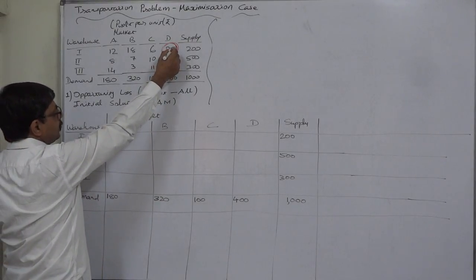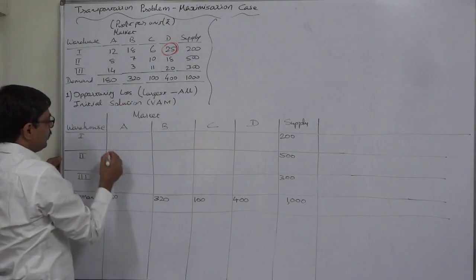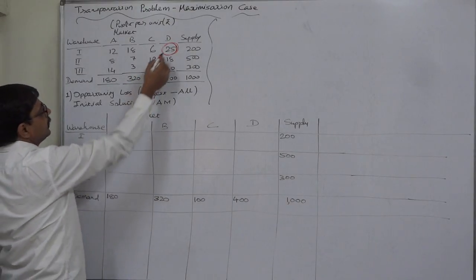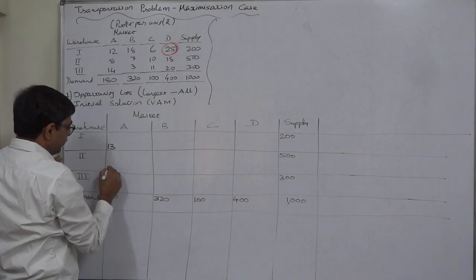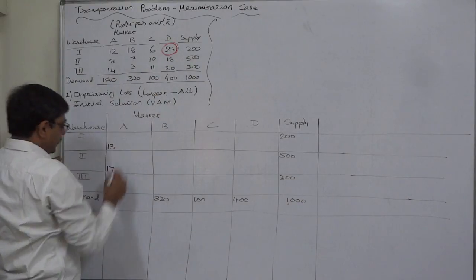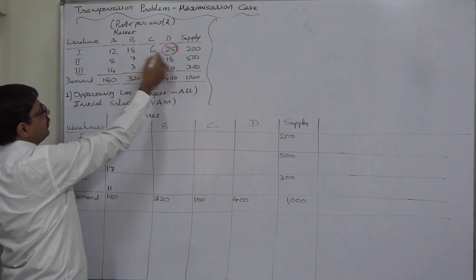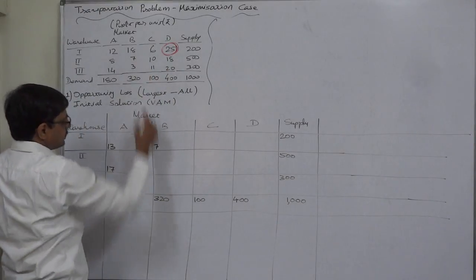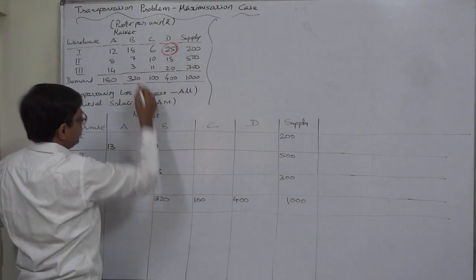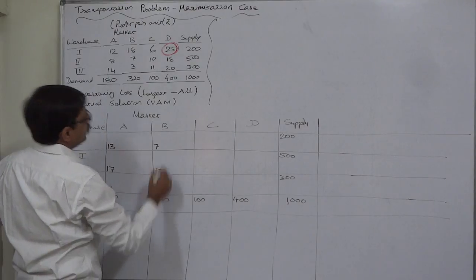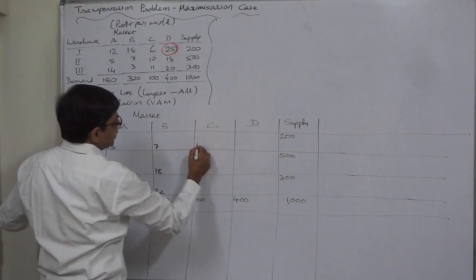25 is the highest value. So, 25 minus 12 is 13. 25 minus 8 is 17. 25 minus 14 is 11. 25 minus 18 is 7. 25 minus 7 is 18. 25 minus 3 is 22. 25 minus 6 is 19.